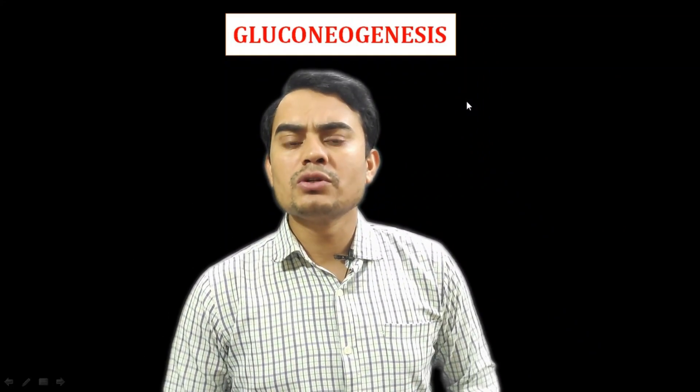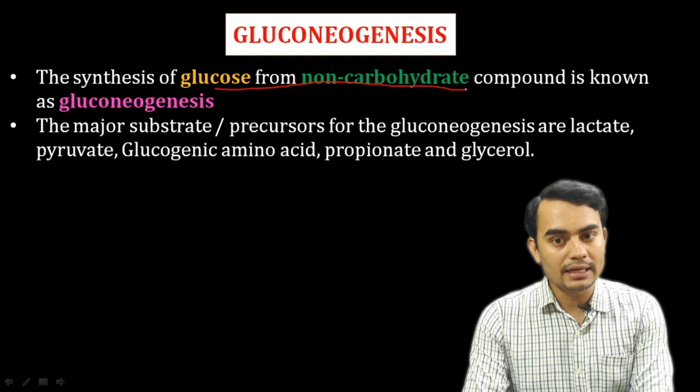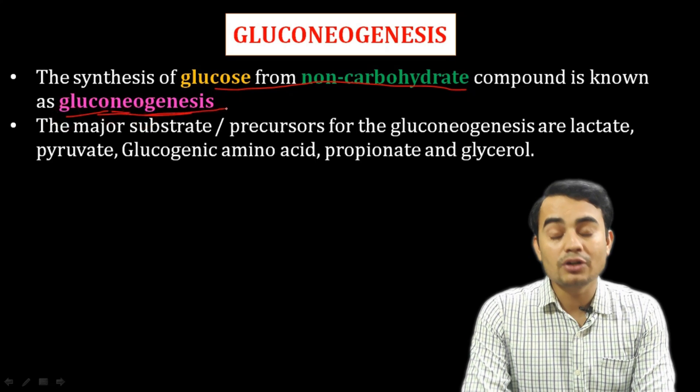In glycolysis, the glucose molecule breaks down to form pyruvate under aerobic conditions, and under anaerobic conditions, lactate is formed. But during starvation conditions, or when blood glucose levels decrease, gluconeogenesis occurs — the synthesis of glucose from non-carbohydrate compounds.